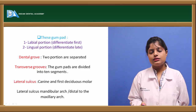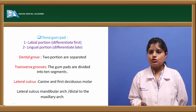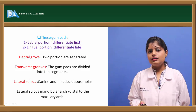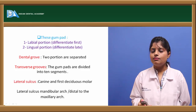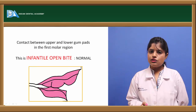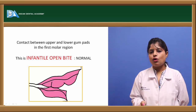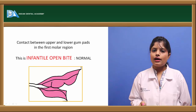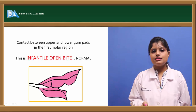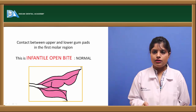The lateral sulcus is the transverse groove that separates the canine and the first deciduous molar. Its significance is that it defines the occlusion and is generally more distal in the mandibular arch than in the maxillary arch. A significant feature of this stage is the infantile open bite, due to the absence of maxillary or mandibular teeth, which helps in the suckling of the infant. Suckling is a reflex present since birth, achieved with the help of the buccal musculature, the lips, and movement of the tongue.